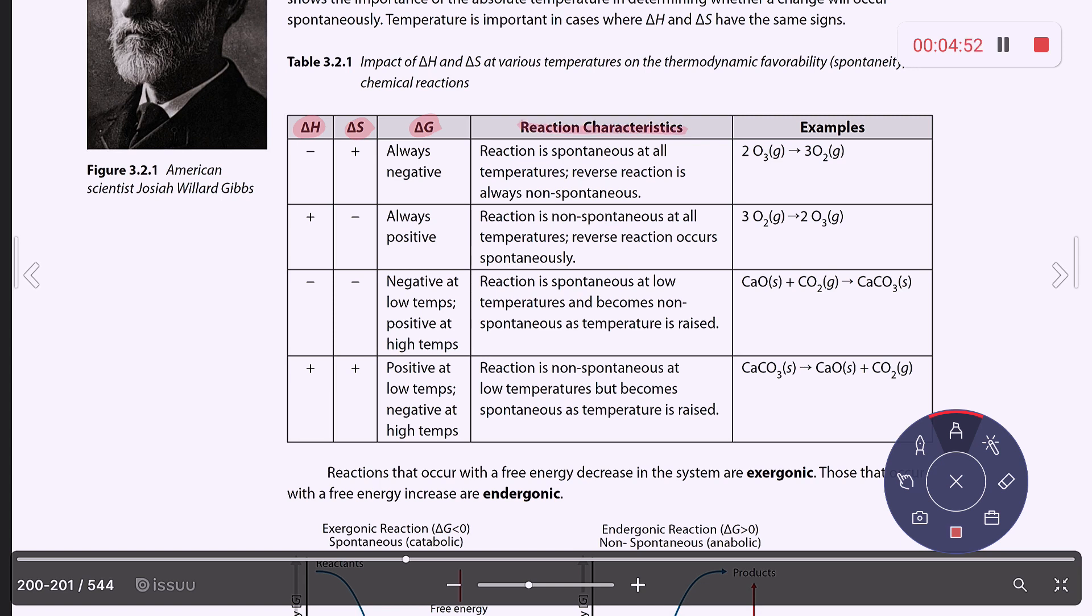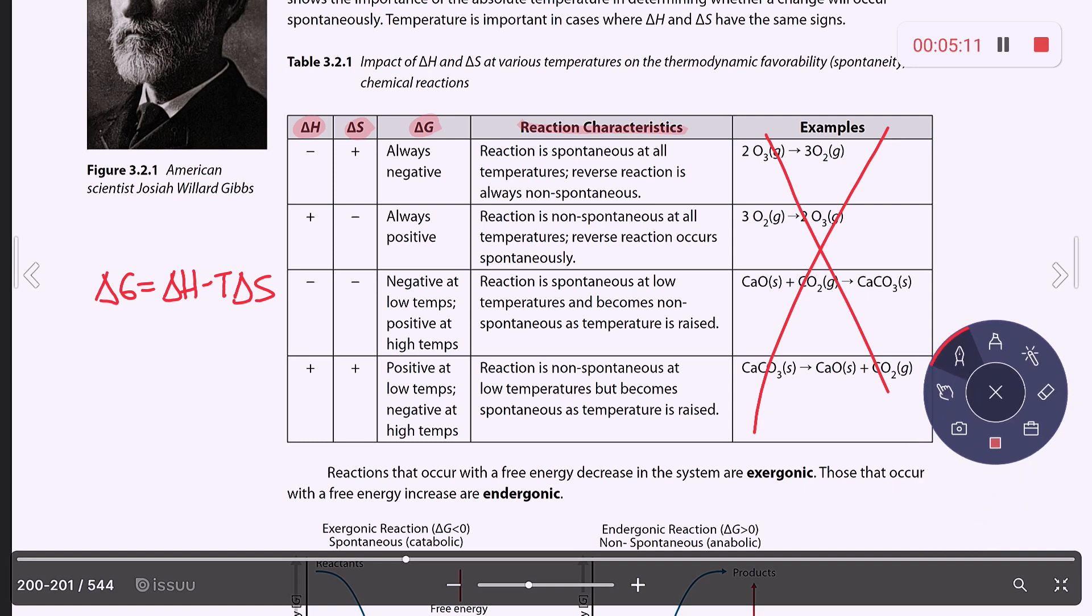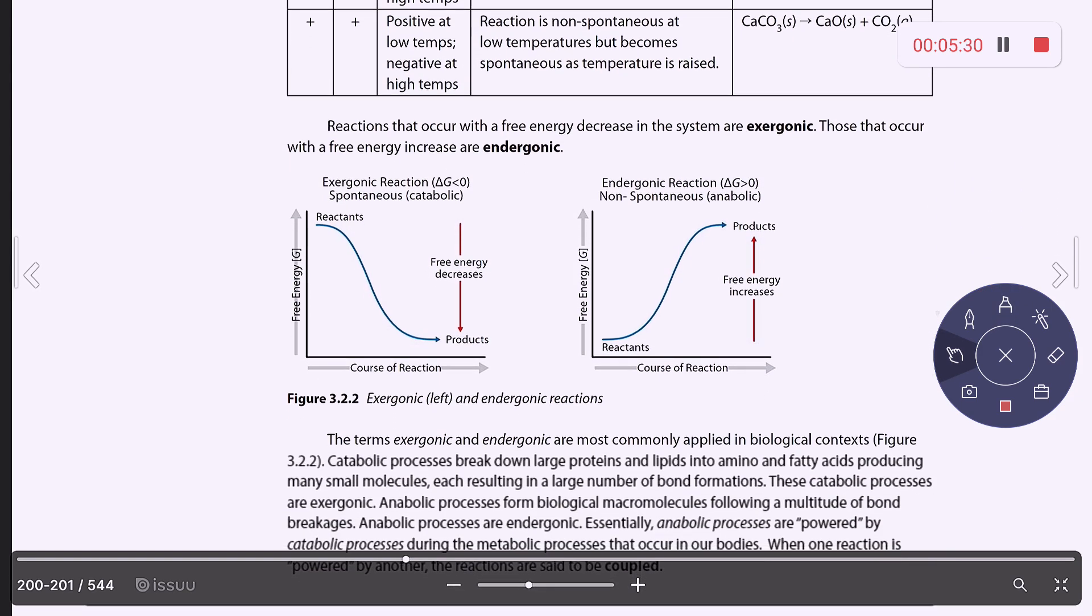I would not memorize this in terms of the examples. But if you go back and you put these values into this equation, like the signs, then you will see how they are coming up with the delta G signs and the reaction characteristics. Reactions that occur with a free energy decrease, so that means G is going down, that means they are exergonic. And then those that occur with a free energy increase, that means G is increasing, then they are endergonic. And this is shown here in the figure.